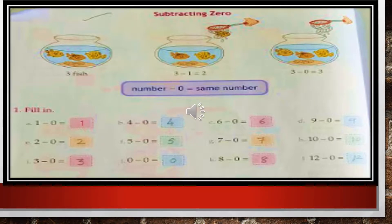Now we have an exercise to complete — fill in the empty spaces. Subtract 0 from 1, the answer will remain 1. Subtract 0 from 4, the answer will remain 4. Subtract 0 from 6, the answer will remain 6. When we subtract 0 from 9, the answer will remain 9. Because, as I already told you, when we subtract 0 from any given number, the digit remains the same — it does not change.